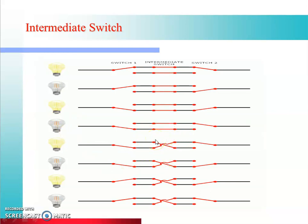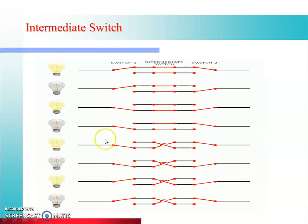Jab hum intermediate switch mein one ko two ke saath aur three ko four ke saath connect karte hain, to yeh 4 cases hote hain. Jab hum one ko four ke saath aur two ko three ke saath connect karenge, tab bhi current ko ek complete path milta hai, aur current ko complete path milne ke kaaran lamp glow karega. Is condition mein start to end current flow hona chahiye, tab jaa ke lamp glow hota hai — jaise is condition mein start point se end point tak aane ke liye current ke paas path hai, to lamp glow hoga.